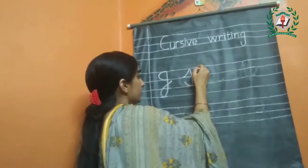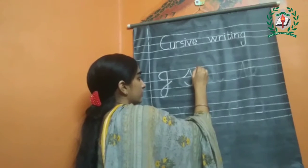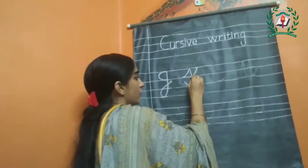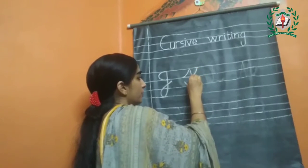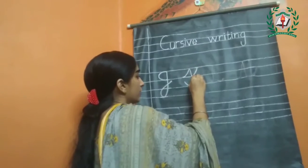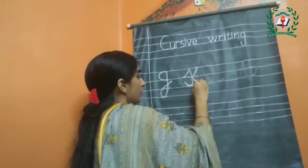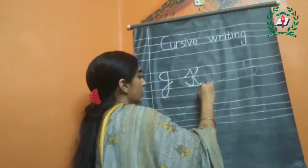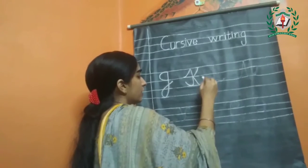Now make a slanting line starting from the upper line to the head line, then make one more slanting line touching to the baseline with a curve.